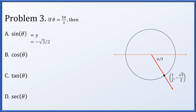The sine of the angle is the y-coordinate, which is −√3/2. The cosine of the angle is the x-coordinate, which is 1/2. The tangent is y/x, which resolves to −√3, and the secant is 1 over the x-coordinate, which is simply 2.